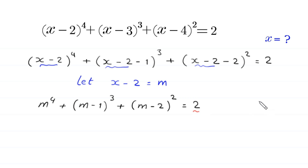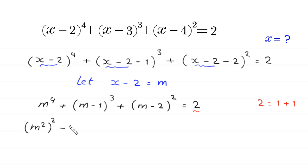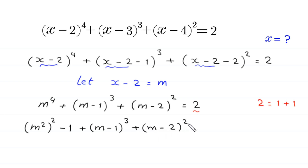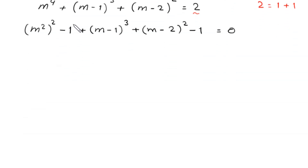Now, this 2 is the same as 1 plus 1. So we can write on the left hand side, subtracting 1 and 1: we write m to the power 4 as m squared whole squared minus 1, plus m minus 1 whole cubed, plus m minus 2 whole squared minus 1, is equal to 0. Now, this 1 is same as 1 squared and this 1 is same as 1 squared.